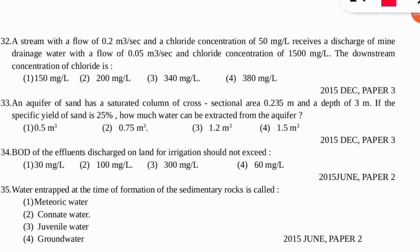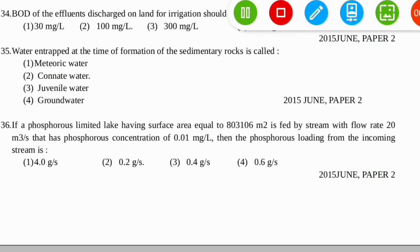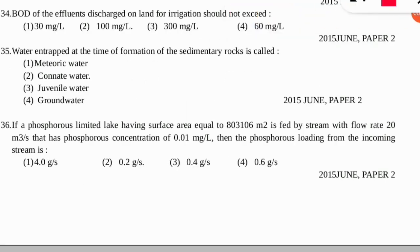The 34th question: BOD (biochemical oxygen demand) of effluents discharged on land for irrigation should not exceed which value? The correct option is 200 milligrams per liter. The next question: water entrapped at the time of formation of sedimentary rock is called what kind of water? The answer is option number two — connate water.